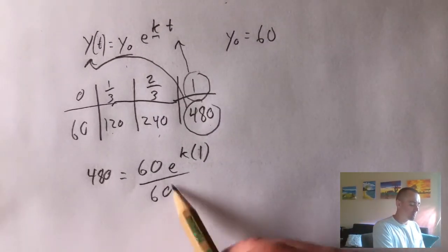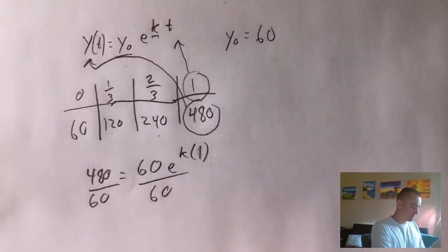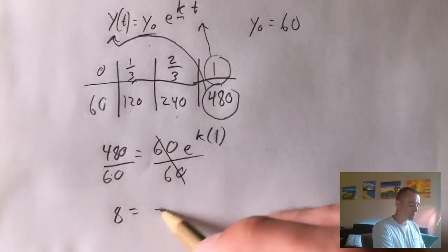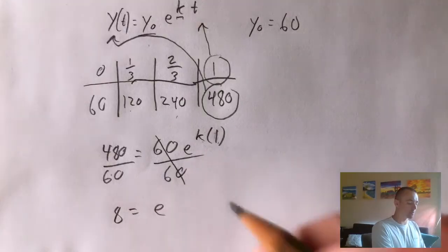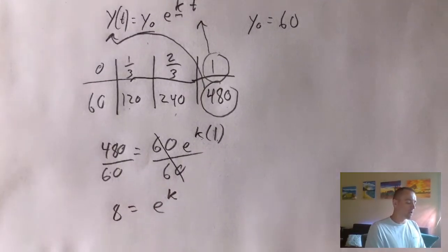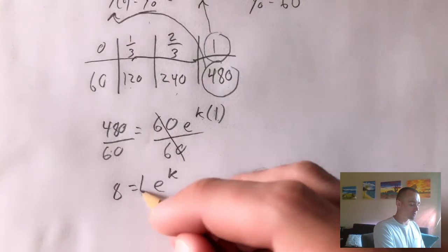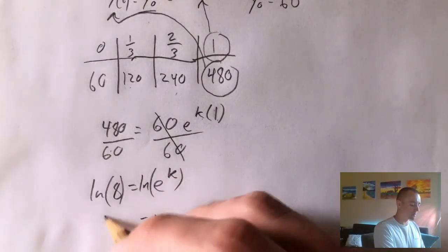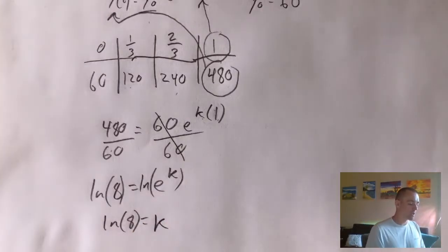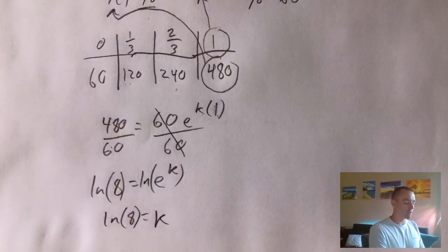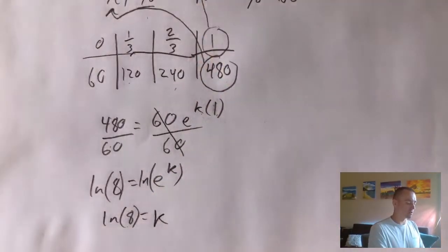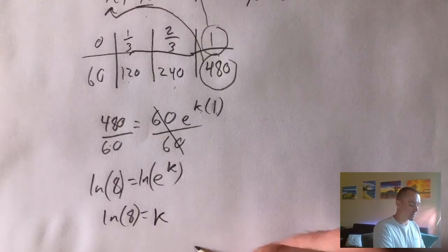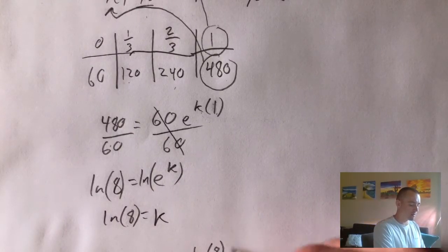So dividing both sides by 60 would cancel the 60 on the right side, and would leave us with 8 over here. And then k times 1 is just k. So then if we want to get the k all by itself, we could just take the natural log of both sides. And that just gives us k equals natural log of 8. So if k is natural log of 8, we could put that back into our original expression, giving us y of t equals 60 times e to the natural log of 8 times t.